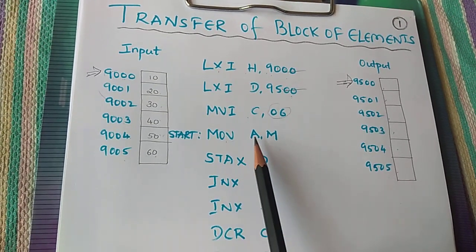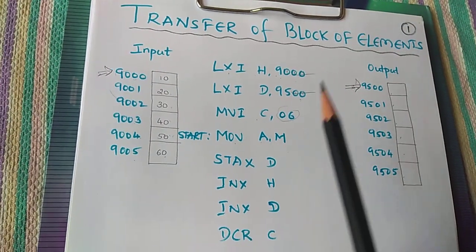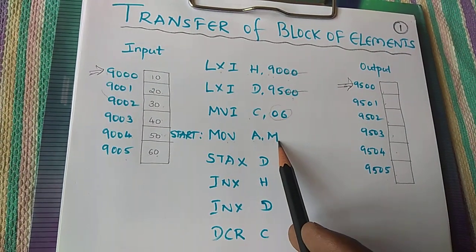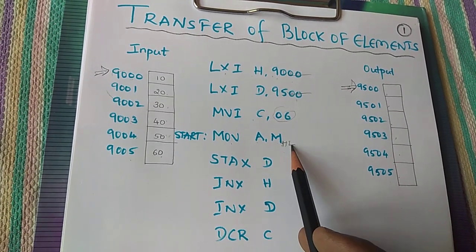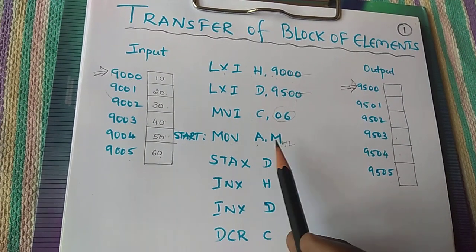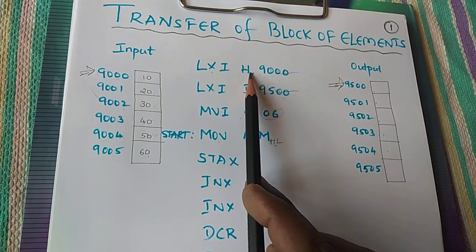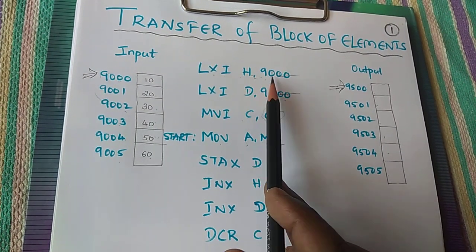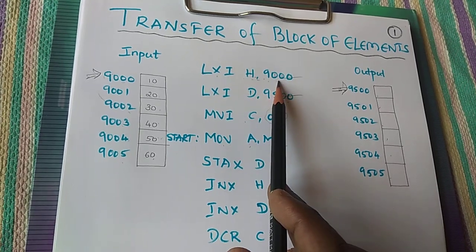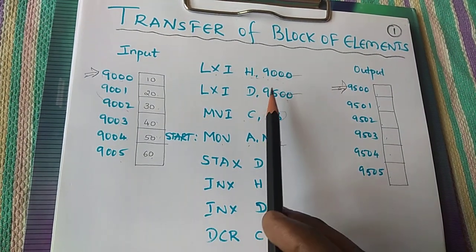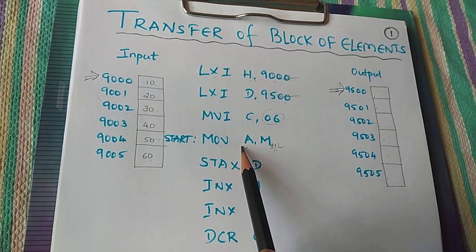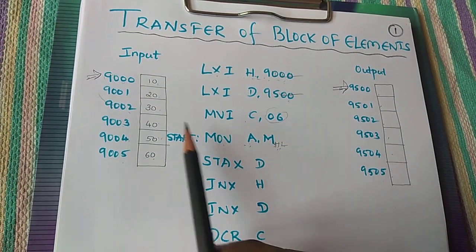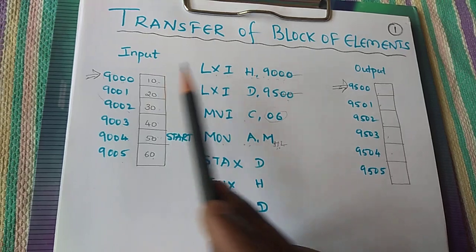Next, MOV A comma M. So the contents of memory location M pointed by the HL pair will be stored into the accumulator. So HL contains 9000 because we are storing LXI H comma 9000 means what? HL contains 9000. So the contents of HL, that is the contents of 9000, that is 10, will be moved to the accumulator. So accumulator contains 10 now.